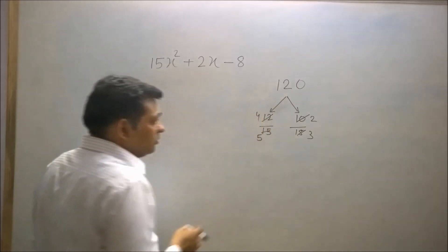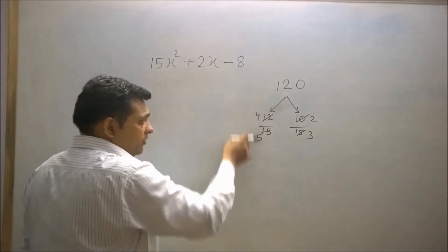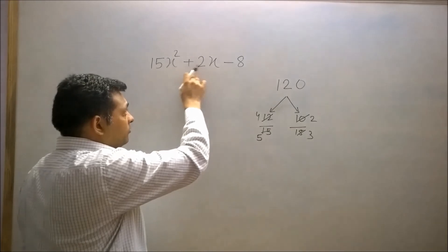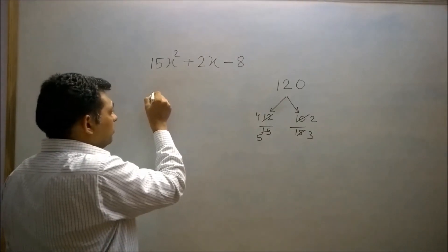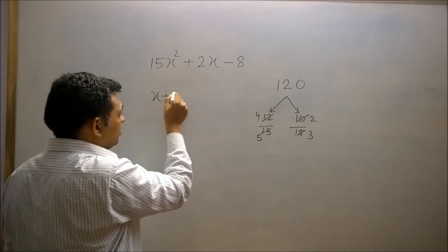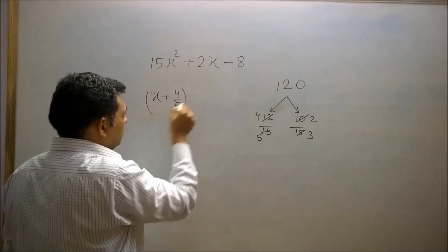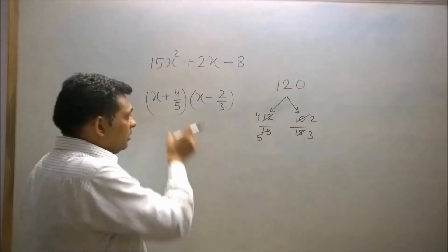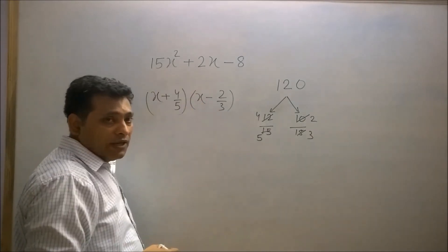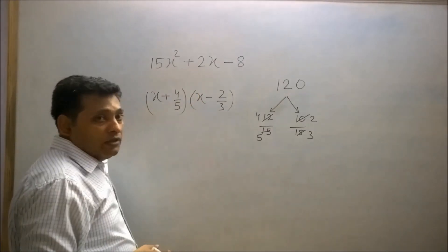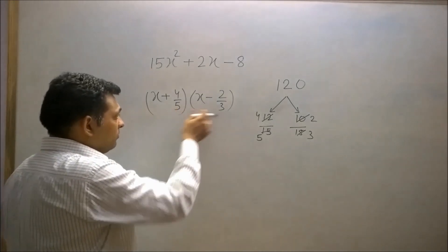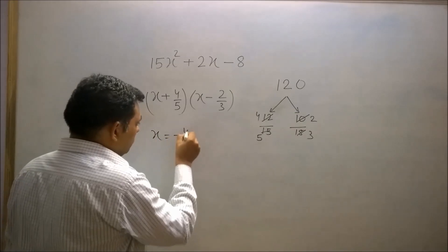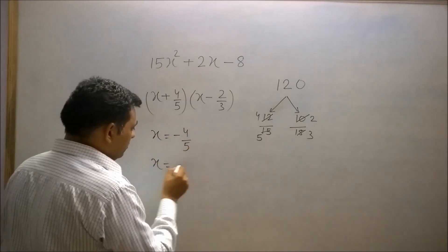The larger number was 12, so the sign of that factor will be the same as the sign of the coefficient of x, which is positive. Therefore the factors are (x + 4/5)(x − 2/3). Since one factor is positive the other will be negative. The roots of this quadratic polynomial are the additive inverses: x = −4/5 and x = 2/3.